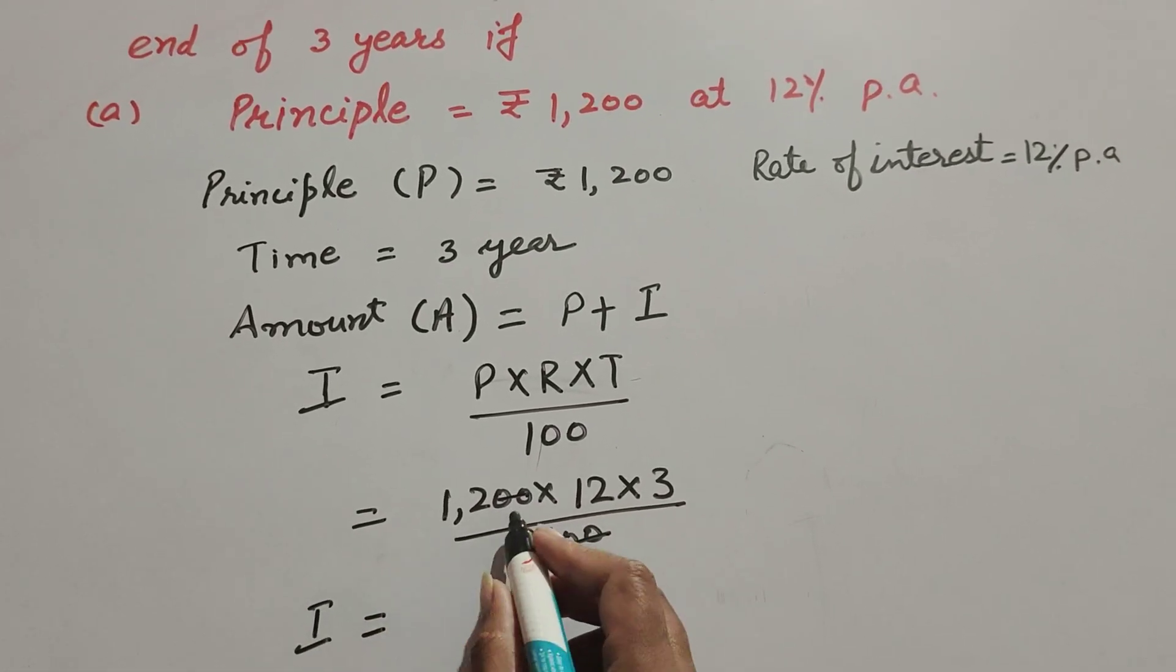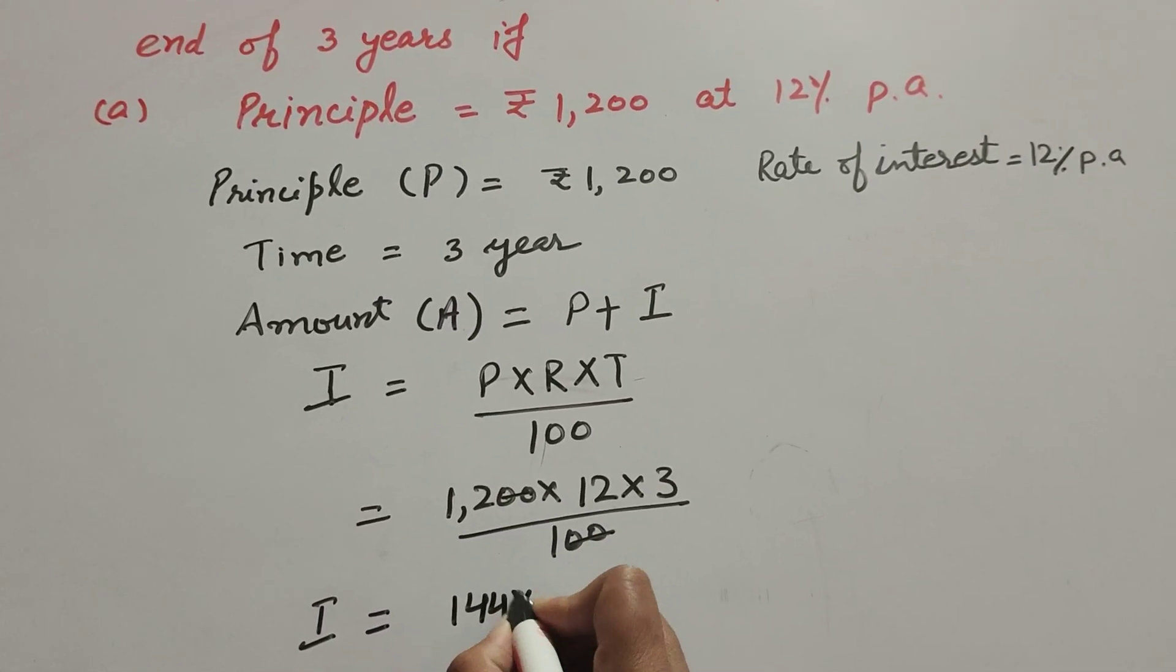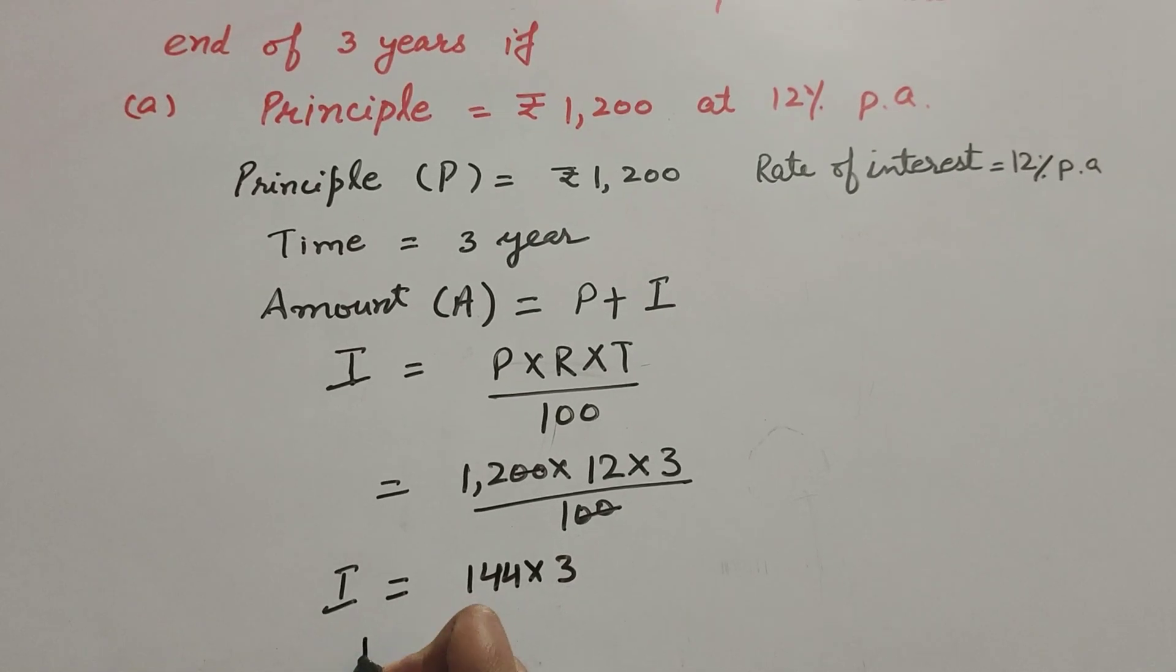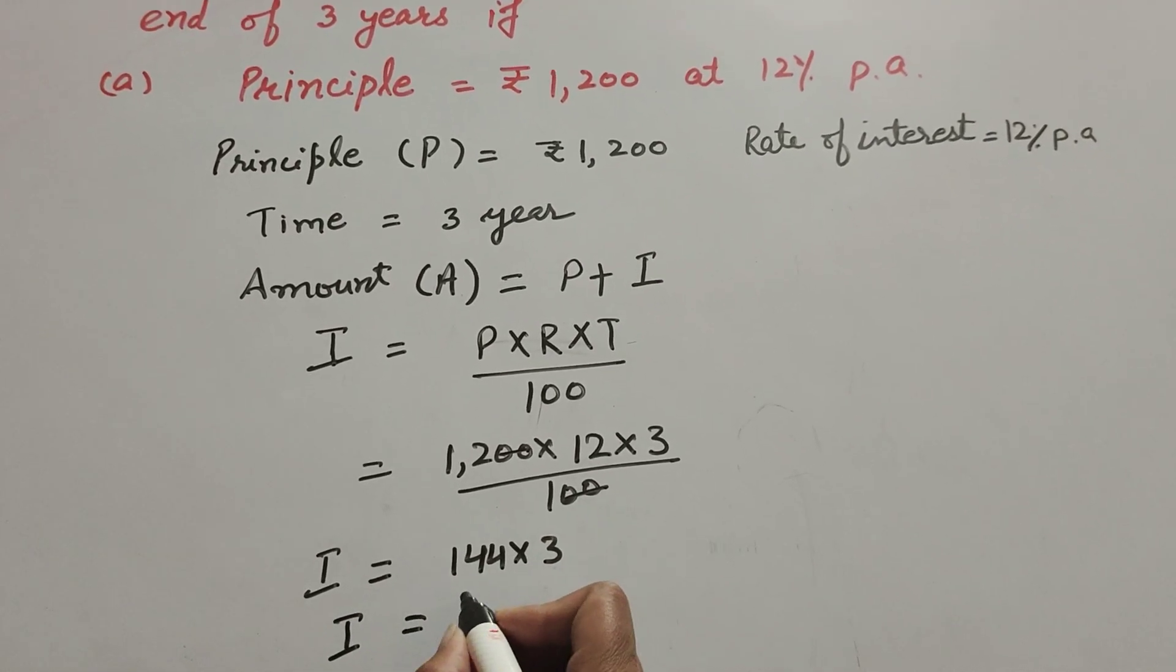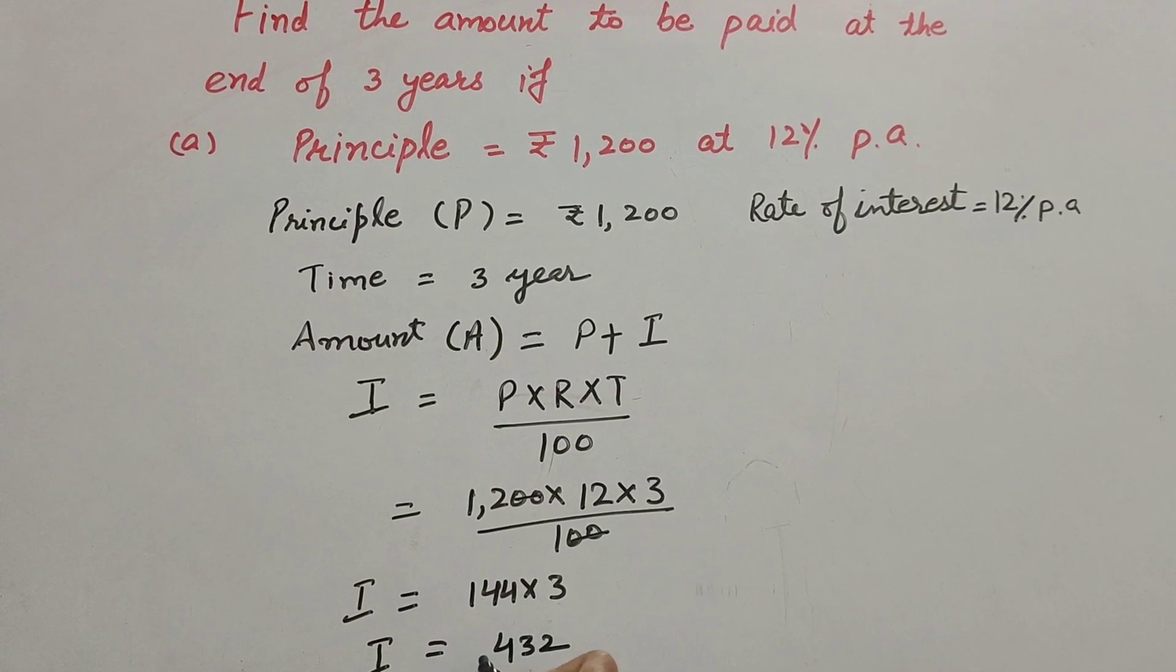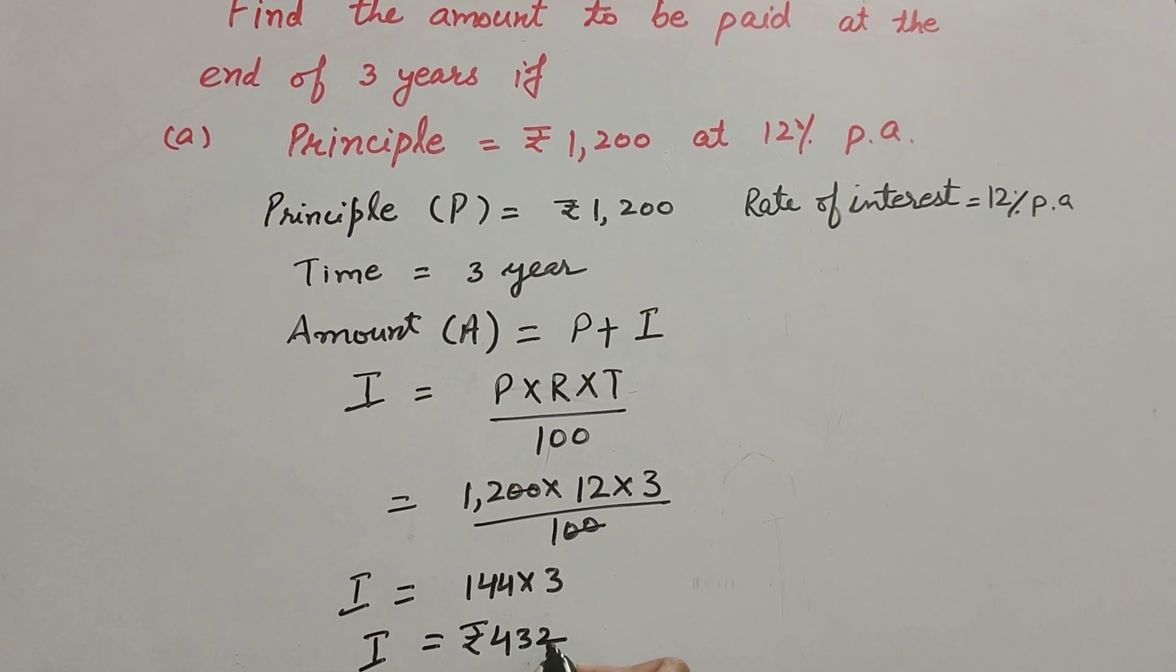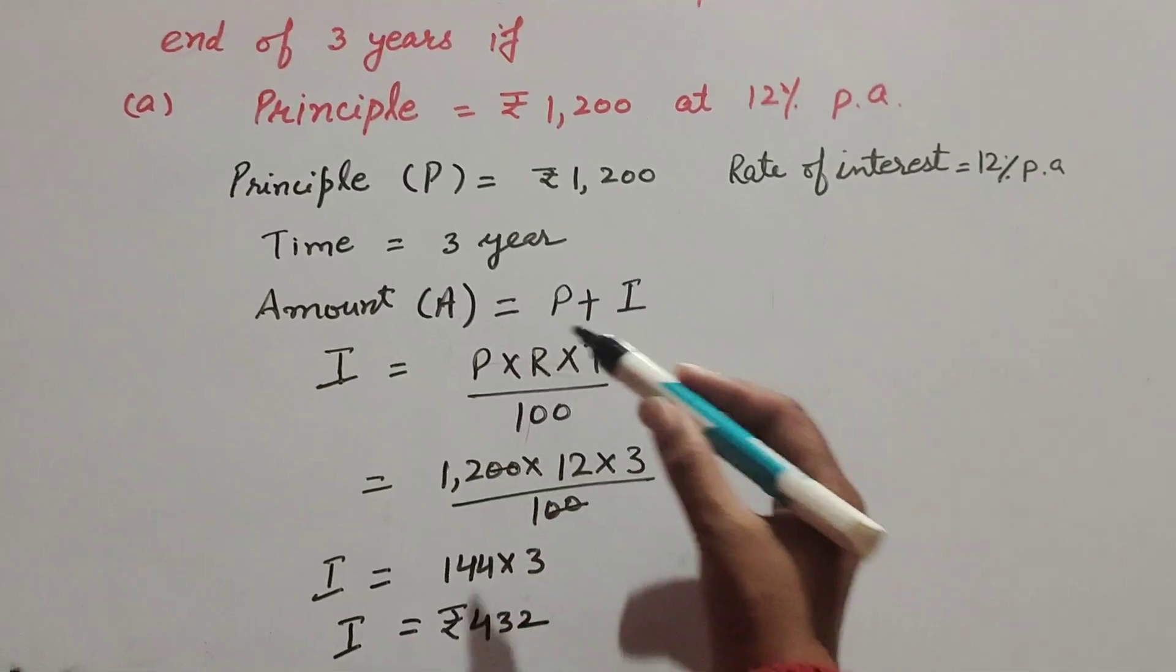So interest I is equal to 12 multiply by 12, 144 multiply by 3. And I is equal to 144 multiply by 3, it is equal to 432. So interest I is equal to rupees 432. Now we find amount.